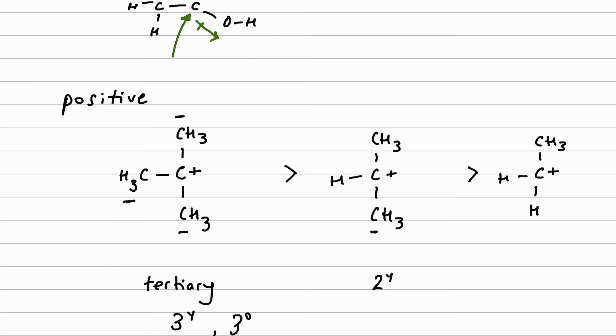Now alkyl groups inflict - is that a good word? Yeah - they inflict a positive inductive effect. That means that electron density is drawn or pushed, you could look at it two ways, from the alkyl groups towards the central carbon atom, this positively charged carbon atom. And by doing so, it stabilizes the carbocation. So as you can probably predict at this point, a tertiary carbocation is going to be more stable, or the most stable of the three.